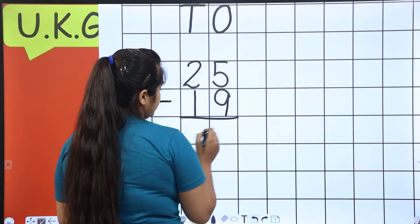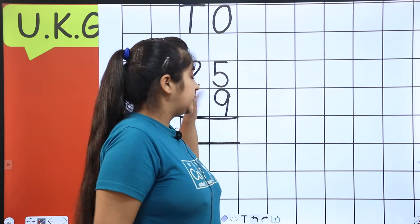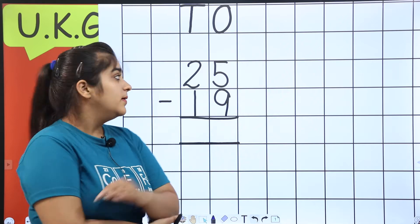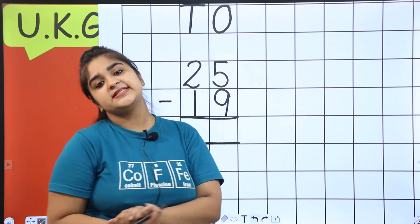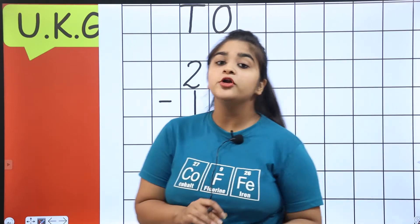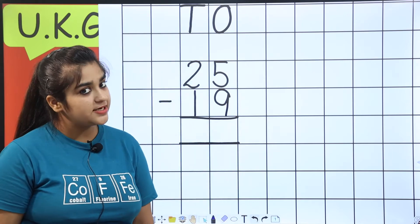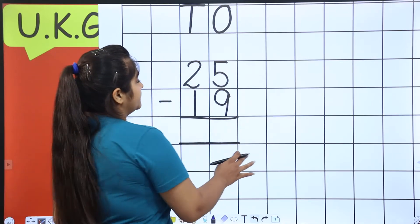Oh, ma'am, how will it be minus? 19 can go into 25, but can 9 go into 5? Can it be 9 in 5? No. So we will say, borrowed. Okay, borrowed, how to borrow it. How to borrow it and how to subtract it? And how to learn it? Okay? So, let's learn. Let's see.